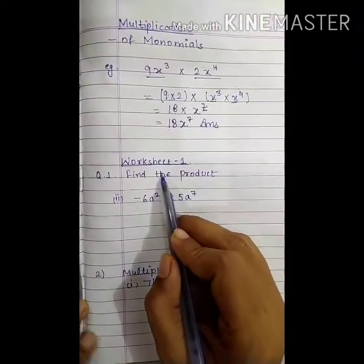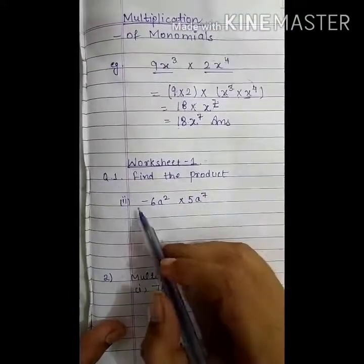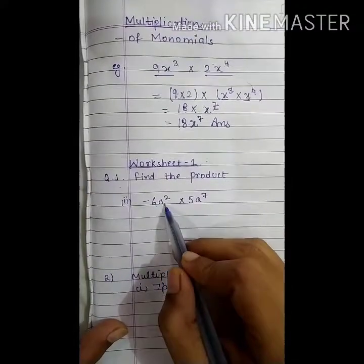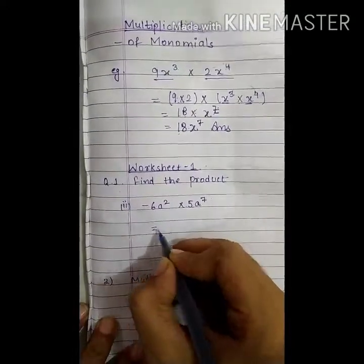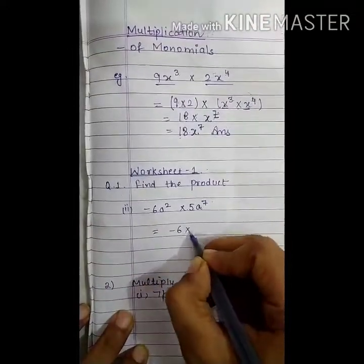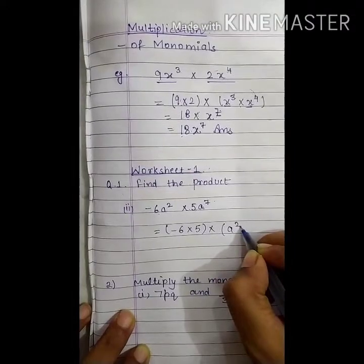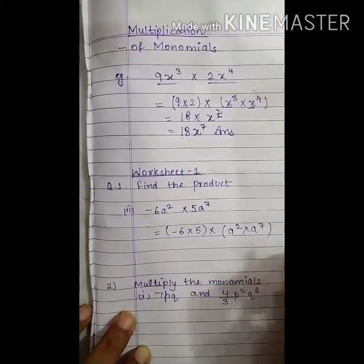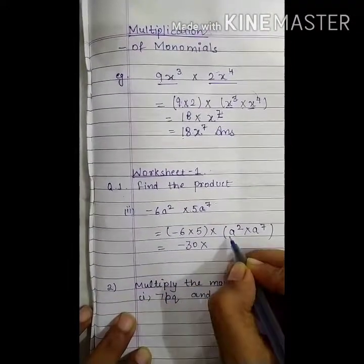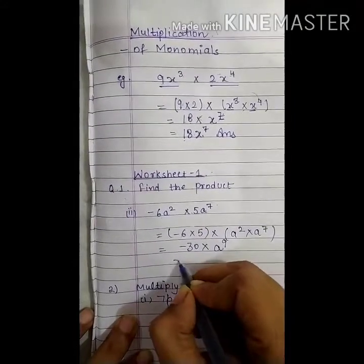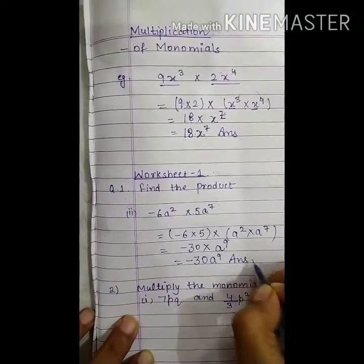Now, let us solve some questions of worksheet 1. Question number 1 is: Find the product. Part second is -6a² multiply by 5a⁷. It equals -6 multiply by 5, multiply by a² multiply by a⁷. -6 multiply by 5 is -30, multiply by a⁹. It equals -30a⁹. This is our answer.